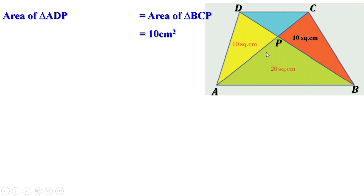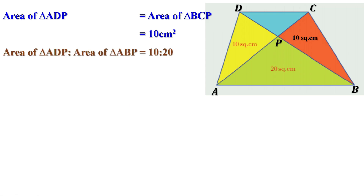Now look at triangle ABD. The line from vertex A to opposite side BD divides BD and the area of the triangle in the same ratio. The ratio between the areas of triangles ADP and ABP equals the ratio between these two parts. Area of triangle ADP to area of triangle ABP is 10 to 20, which equals 1 to 2.